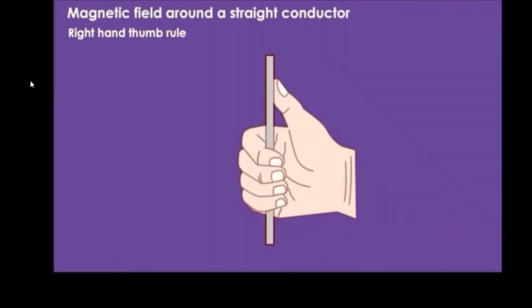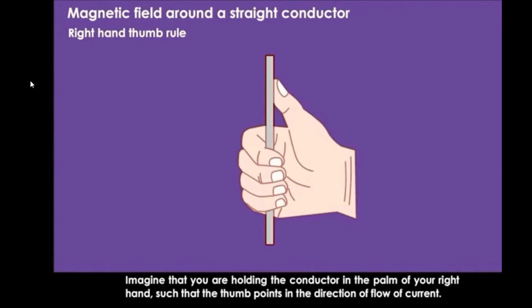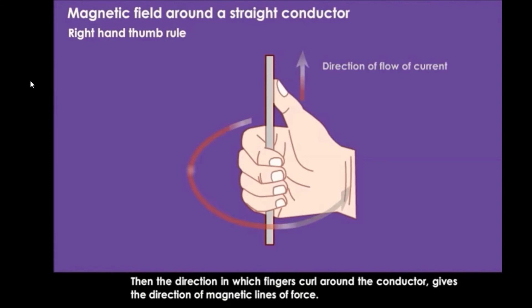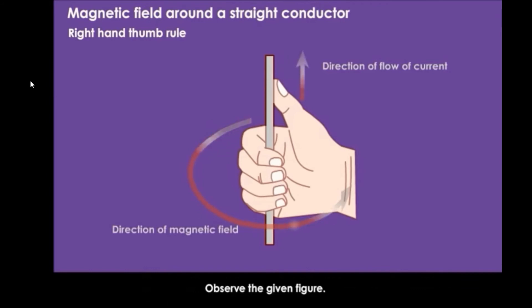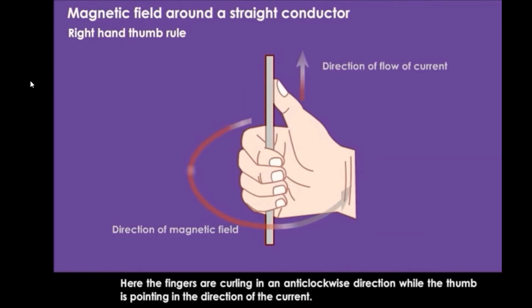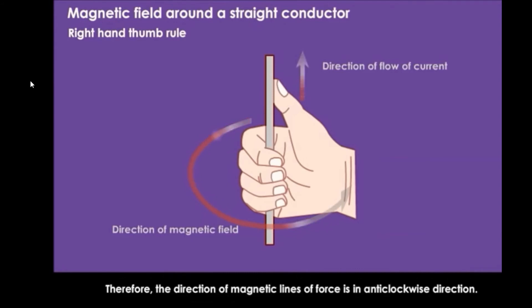Magnetic field around a straight conductor can be explained better by the right hand thumb rule. Imagine that you are holding the conductor in the palm of your right hand such that the thumb points in the direction of the flow of current. Then the direction in which the fingers curl around the conductor gives the direction of the magnetic lines of force. Here, the fingers are curling in anti-clockwise direction while the thumb points in the direction of current, so the direction of magnetic lines of force is anti-clockwise.